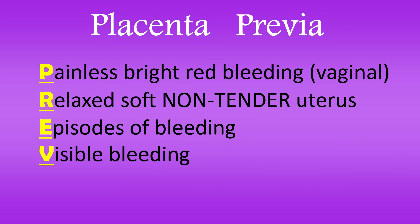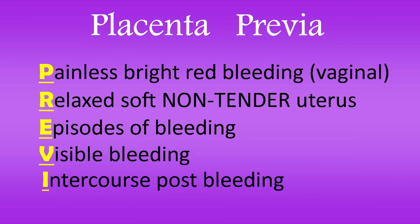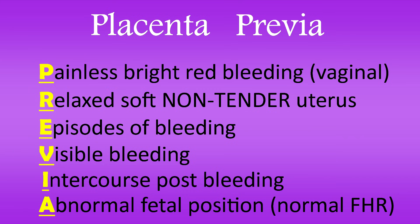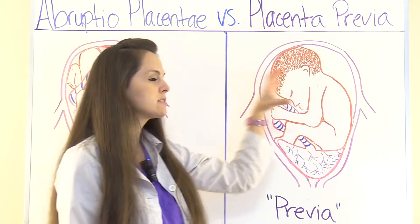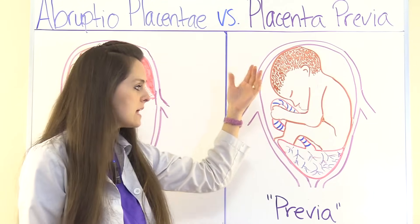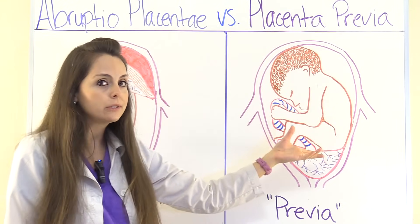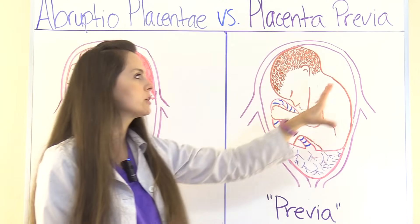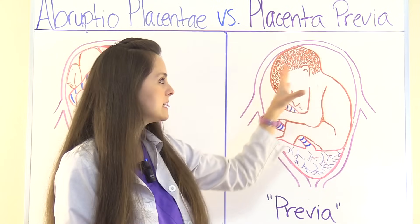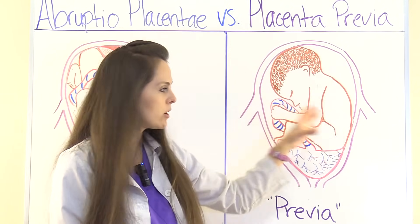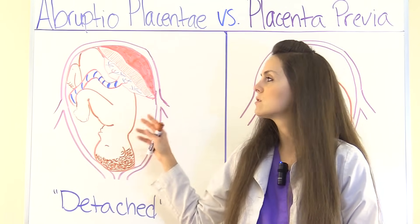V is for visible bleeding — not concealed as in some cases with Abruptio Placentae. I is for intercourse post bleeding, where after sexual intercourse they will have bleeding because the placenta is right at the cervix; this can be spontaneous or occur during labor. A is for abnormal fetal position — the baby can be breech or in a transverse lie because the placenta is occupying the lower uterus where the baby's head should be. The baby's heart rate tends to be normal, unlike Abruptio Placentae where fetal distress is much more common.